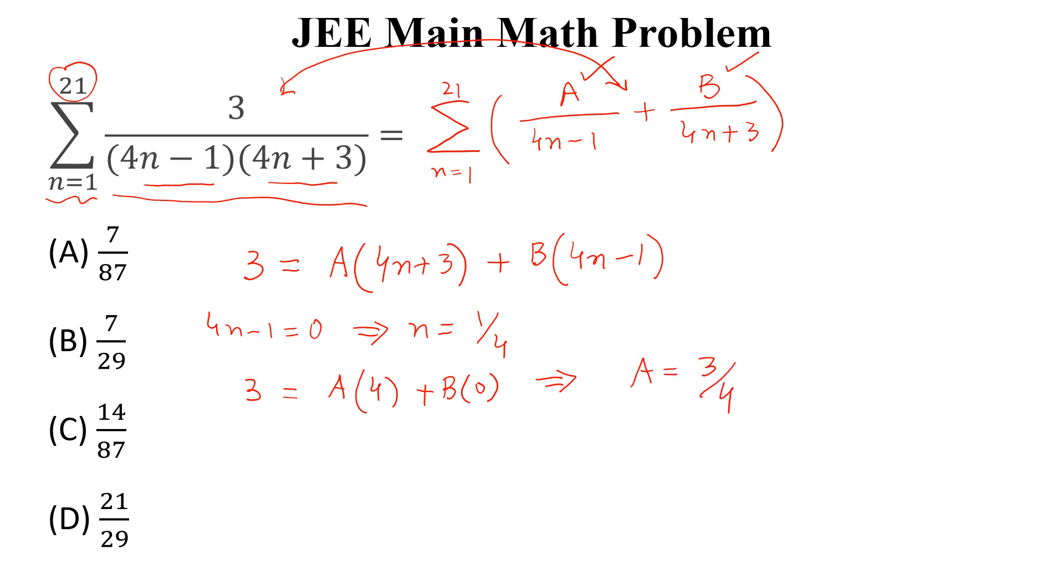Next, we consider 4n plus 3 equal to 0 and n is equal to minus 3 by 4. So we get 3 is equal to A into 0 plus B into minus 4, and this implies B is equal to minus 3 by 4.